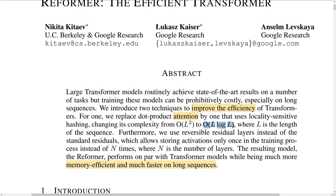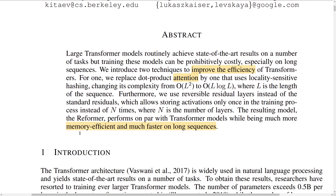The authors propose modifications to this attention that reduce the complexity to O(L log L), making the attention and the architecture much faster and much more practically usable on very long sequences — for example, when modeling very long documents for document summarization or something like that. This is one of their major contributions. The new Reformer architecture is much more memory efficient and much faster on longer sequences in comparison to the standard transformer.